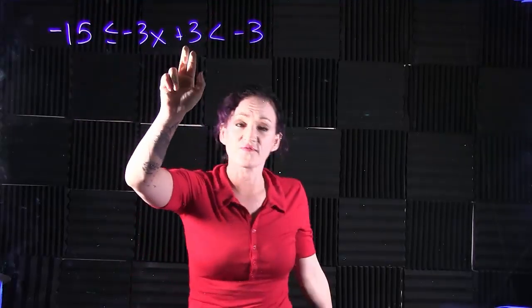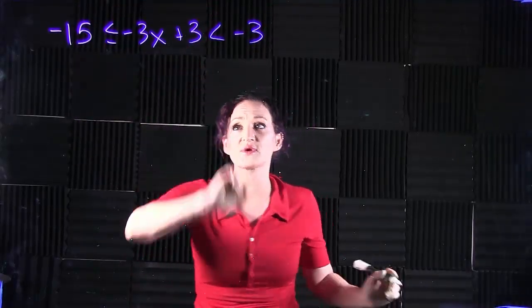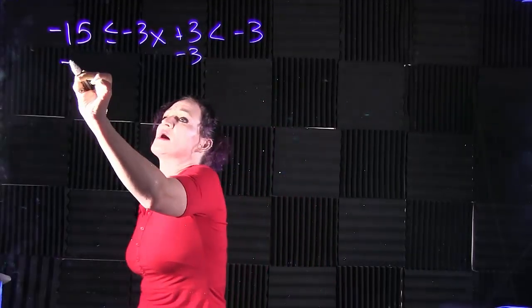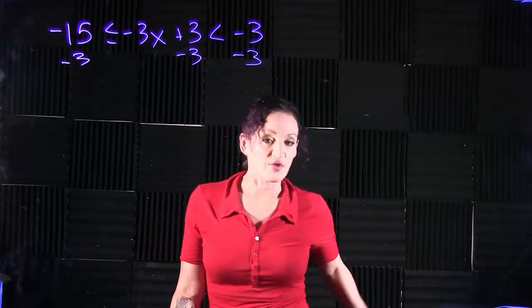Looking at the middle section, if I want to get x by itself, the first thing I'm going to do is get rid of this plus 3. The opposite of a positive 3 is a minus 3, so I'm going to subtract 3 in all three sections.